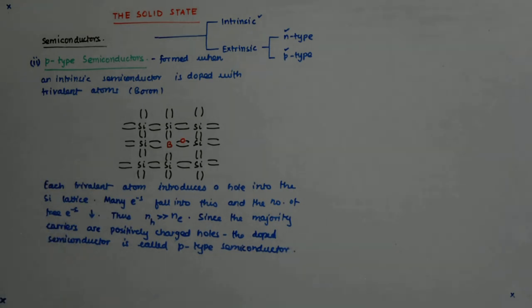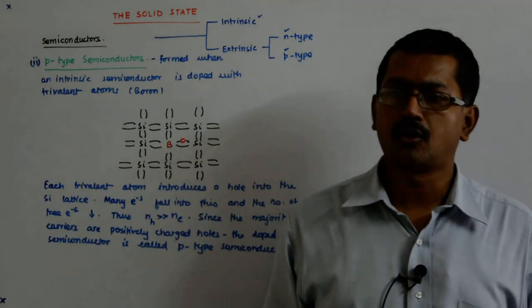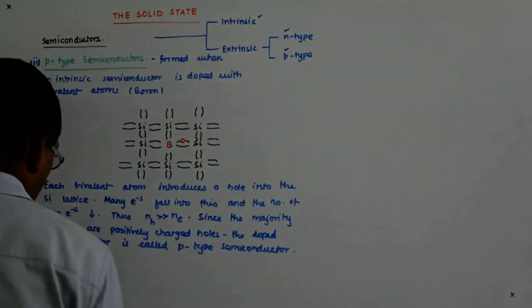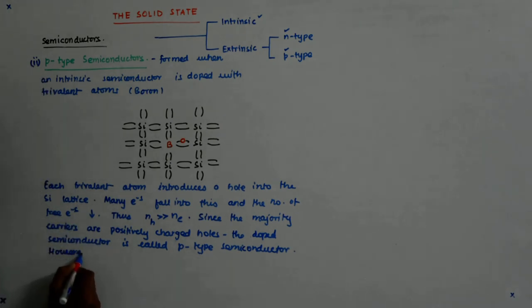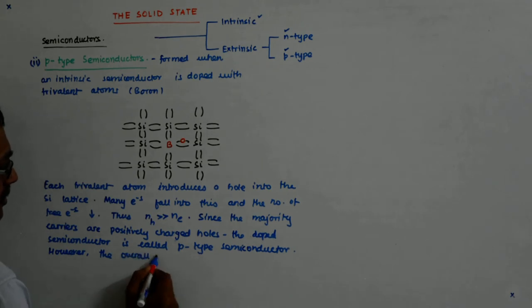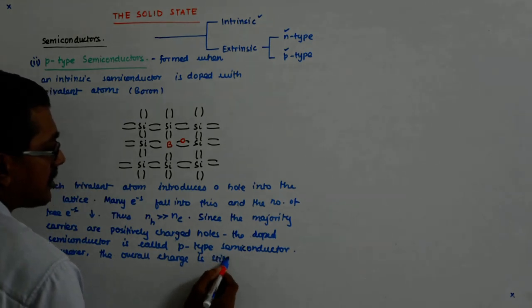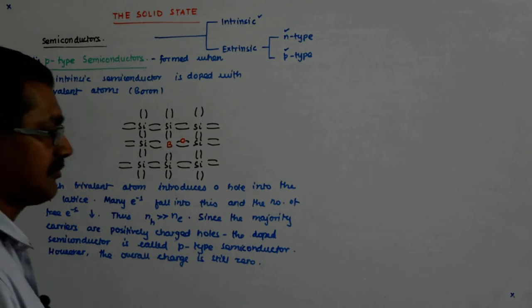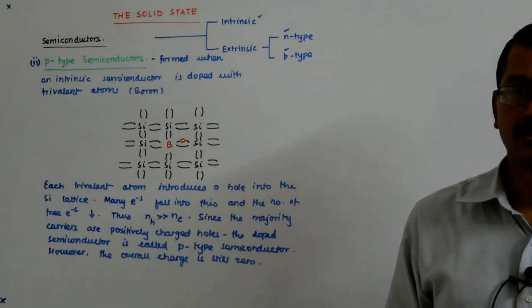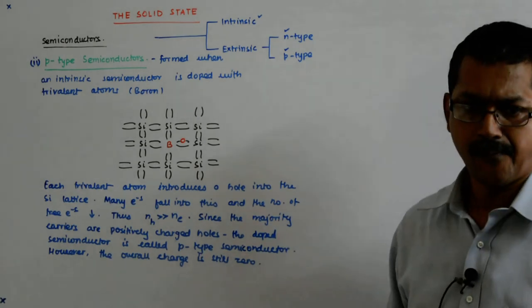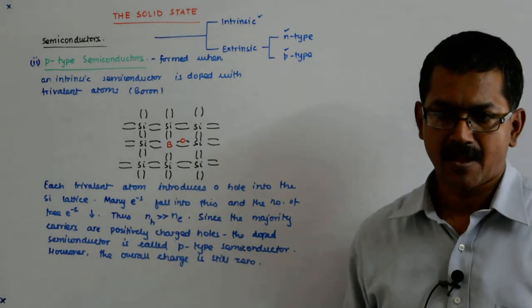Obviously, as we discussed earlier, the overall charge on the conductor is still zero. The overall charge is still zero.